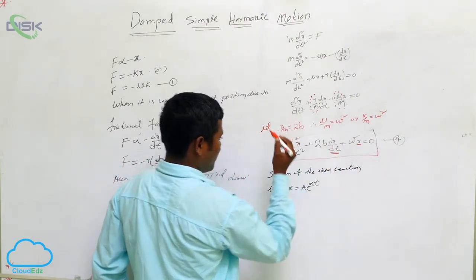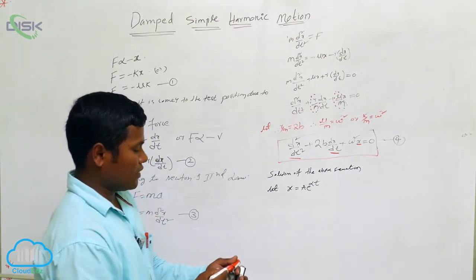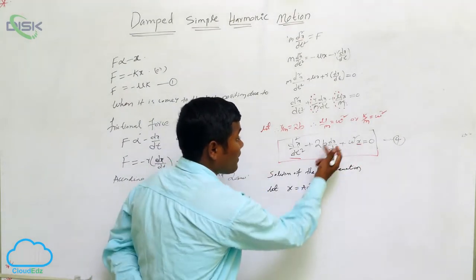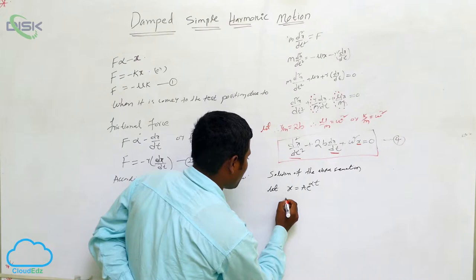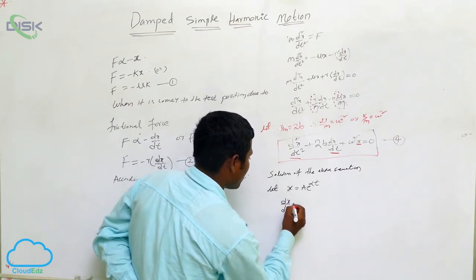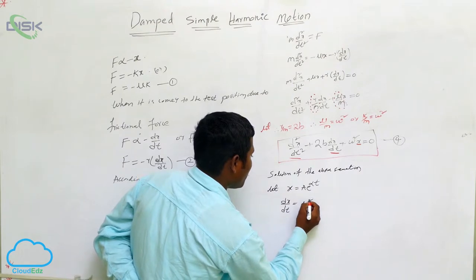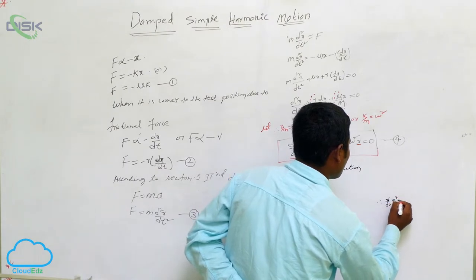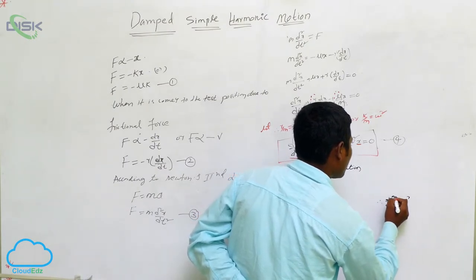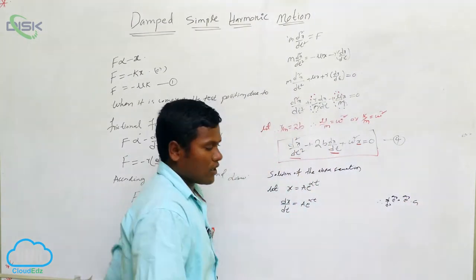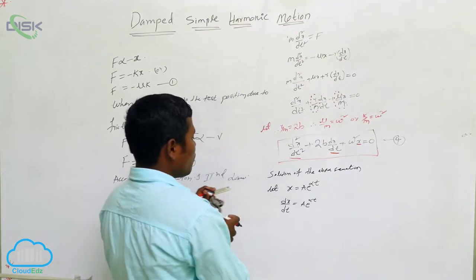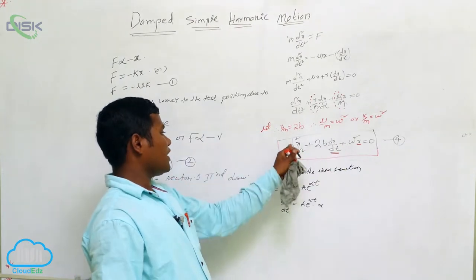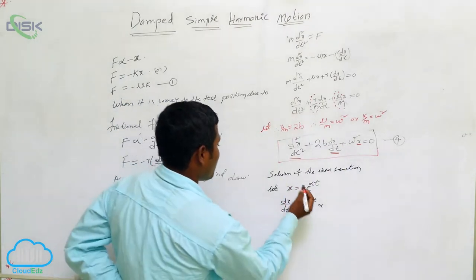Next we need dx/dt, and then d²x/dt². No need to find the x value separately — already we are having it, so we can directly substitute. For dx/dt, since A is a constant, the differentiation of e to the power of αt gives us α coming out. So we write dx/dt = A·α·e^(αt).